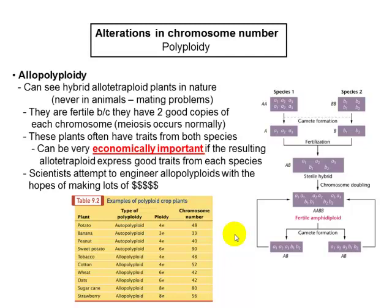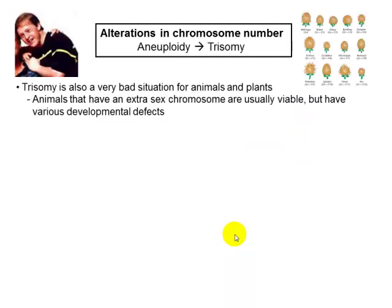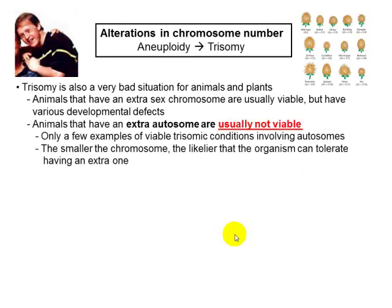It does bother me a little bit when I see people on TV talking about Frankenstein foods. I'm pretty sure they never took a genetics course before. Here is an example of a trisomy — and as I said, the most noticeable one is trisomy 21, in which you have three of the same type of chromosomes present in a cell.